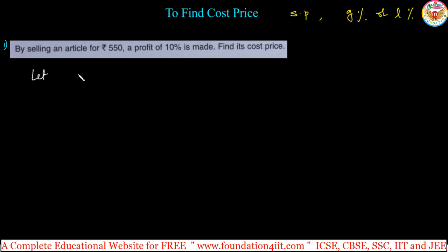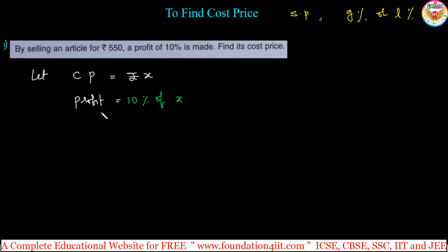Let cost price equal to rupees x — that is what they purchased. The profit is 10 percent, so profit amount is 10 percent of x, which is 10 by 100 times x, that is x divided by 10. So x divided by 10 is the profit.